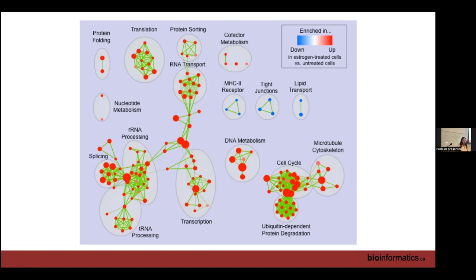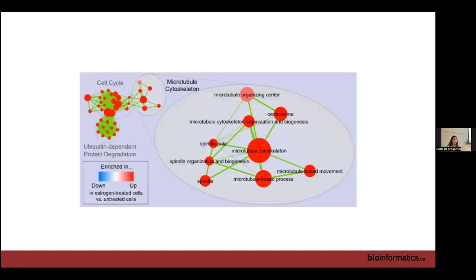We have circles around functions that are related to each other — there's an app called AutoAnnotate that helps calculate what those cluster summaries should be. The way it works is it uses a clustering algorithm to identify clusters, grabs all the node names, looks at the words in the names, and tries to guess the best description for that cluster. A lot of them end up not being perfect. You can zoom in on an individual cluster — for example, 'microtubule cytoskeleton' — and this is a decent summarization of that subcluster.